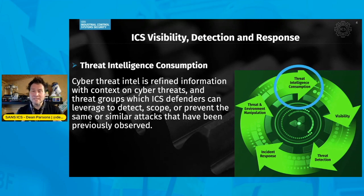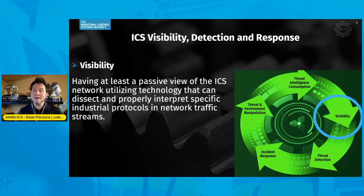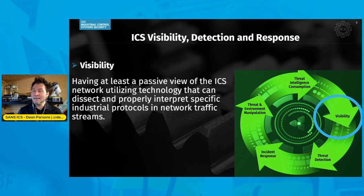Once we have threat intelligence into our process, we'll put that to use with visibility. Specifically, ICS visibility refers to at least a passive view of the control system networks. When we have that in place, we're able to leverage ICS-specific or ICS-aware technology that can properly dissect and interpret specific industrial control protocols for control systems.